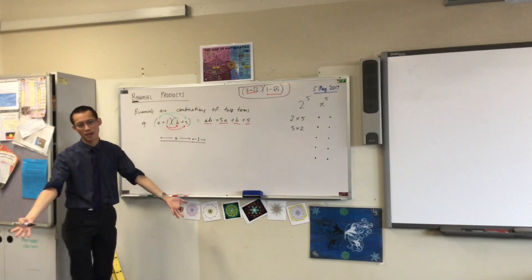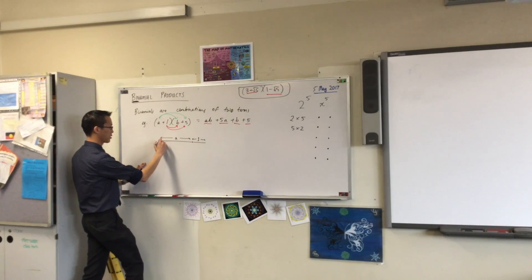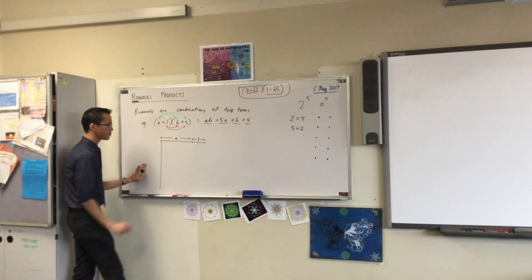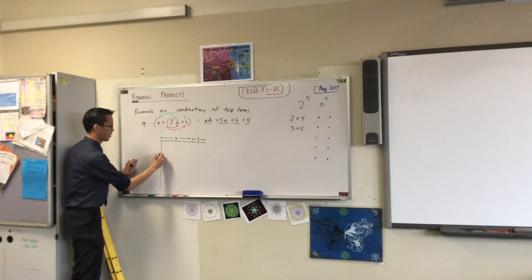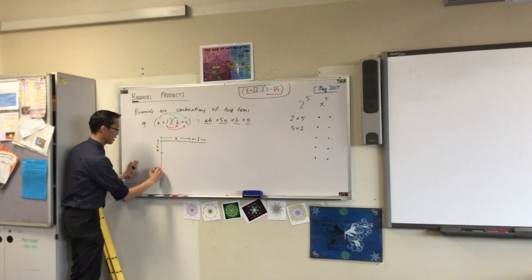Now, I'm just making up lengths, by the way. It doesn't matter how long these are. It's just a picture. B plus 5. Let's call that something like this. So let's make this bit the B. And this bit the 5.